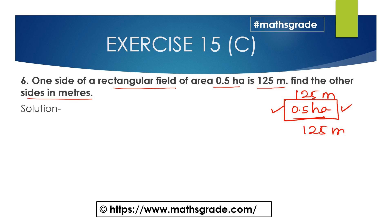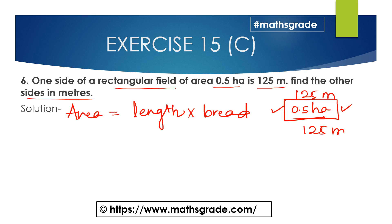Area is given as 0.5 hectares. The area of a rectangular field is length multiplied by breadth. Area and length are given, so breadth equals area divided by length.